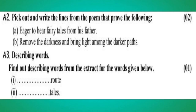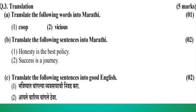A2: Pick out and write lines from the poem that prove: a. Eager to hear fairy tales from his father. b. Remove the darkness and bring light among the darker path. A3 Describing words: Find describing words from the extract for: 1. route, 2. tales. Question number 3 Translation: A. Translate into Marathi: 1. coop, 2. vicious. B. Translate into Marathi: 1. Honesty is the best policy. 2. Success is the journey. C. Translate into good English: 1. Bhavisha changlaya vyavasayachi nivad kara. 2. Aaple charitriya changlaya theva.